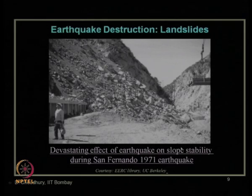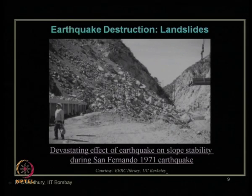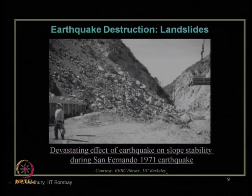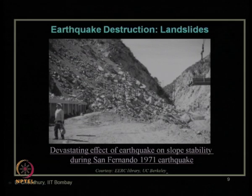This picture shows the devastating effect of earthquake on slope stability after the San Fernando earthquake of 1971 — this is the landslide that occurred after the earthquake.